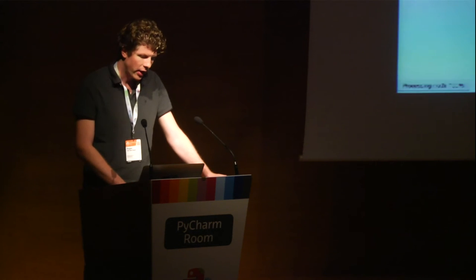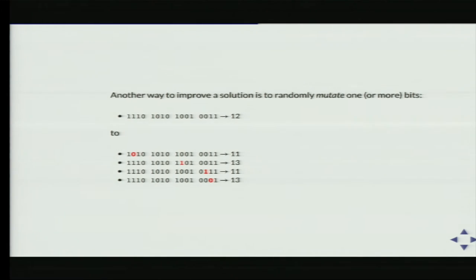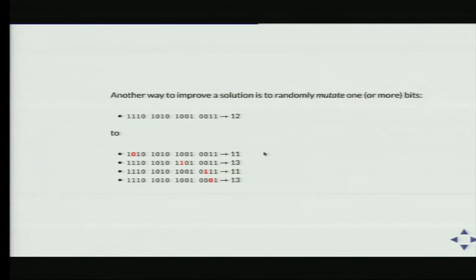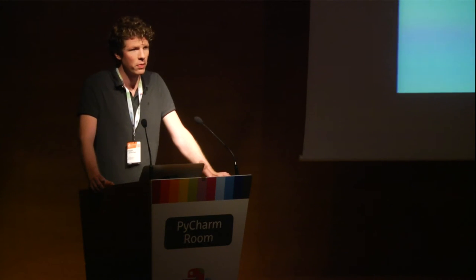Another way to improve a solution is by randomly mutating a single bit. For example, take the solution with score 12, change a bit from one to zero, and the score might drop to 11 — but sometimes we get lucky and find a better solution. We keep doing this: take two good solutions, combine them, hopefully find better solutions, then mutate them and combine them some more, until we have a satisfactory solution.